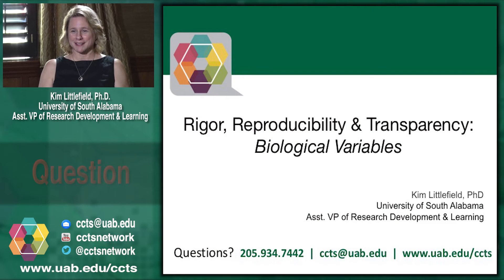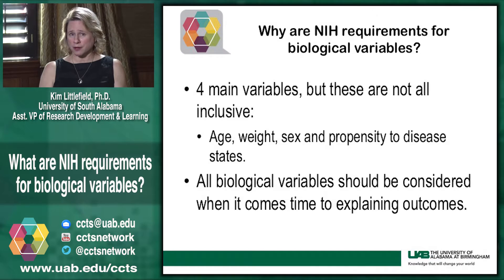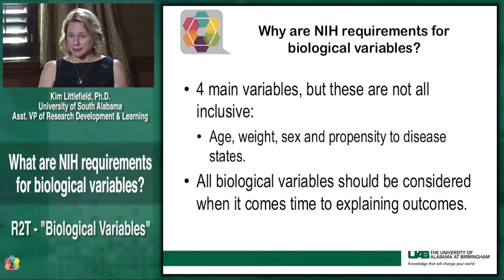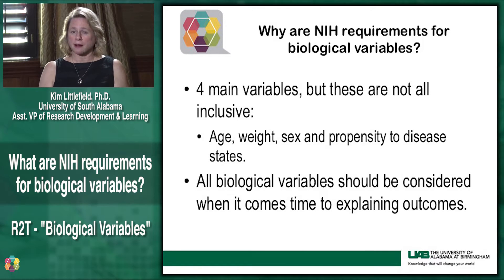I'm Kim Littlefield and today we're going to talk about NIH's rigor and transparency policy with respect to biological variables. There are four specific variables and this is not all-inclusive. Those variables might include age, weight, sex, and propensity to disease states, and all of these different variables may affect outcomes and should be considered when you're designing your research.